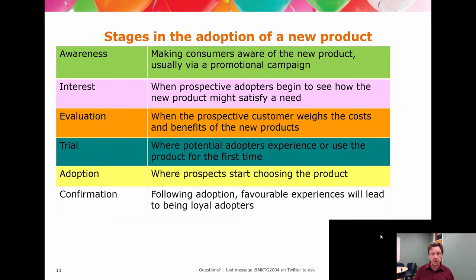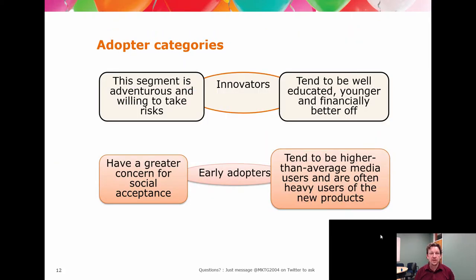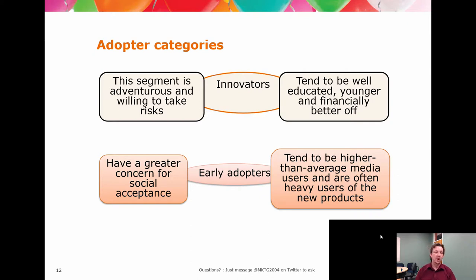The adopter categories are a bit of consumer behavior theory making a return — this is a market segmentation tool. What the slides describe are market segments. The innovator, if you look at the description: younger — that's age; well-educated — demography; financially better off — demography. So we have the elements of segmentation applied to describing the small market of innovators.